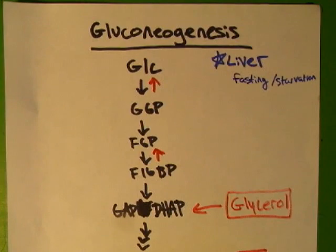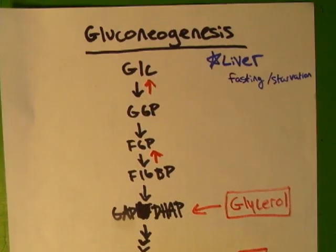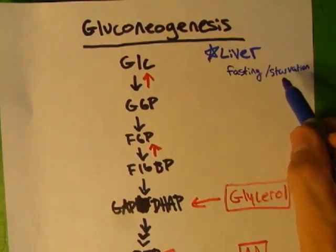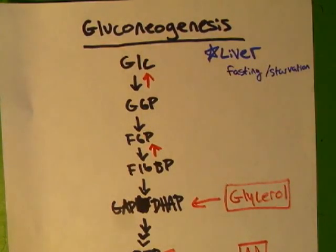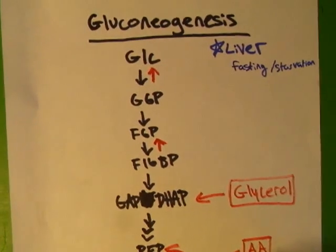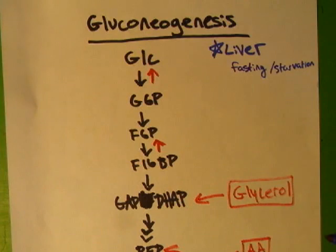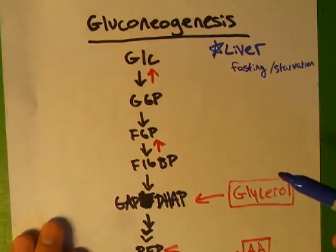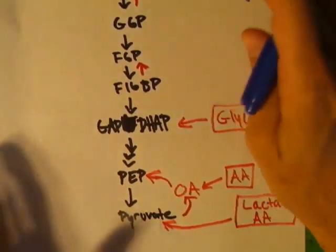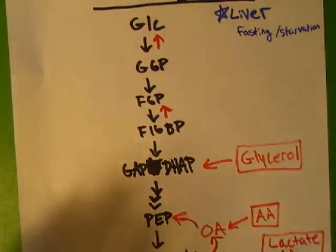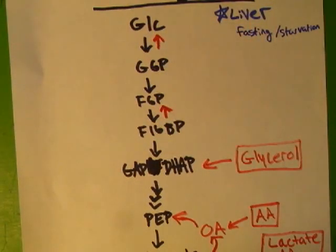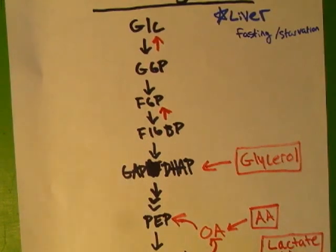Alright, gluconeogenesis. Gluconeogenesis is basically glycolysis backwards for the most part. It happens in your liver cells during fasting and starvation. Your liver's a good guy. He'll take care of the rest of your body. So it's going to take some non-glucose things and turn them into glucose. What we have here is glycolysis. If you don't remember all those enzymes you might want to watch the Unit 3 video for that again as well as the regulation because the regulation is pretty similar. And you're going to need to know part of it for this unit.